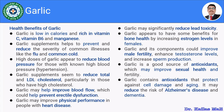Garlic appears to have benefits for bone health by increasing estrogen levels in females, making it useful in osteoarthritis. Garlic and its compounds could improve male fertility, enhance testosterone levels, and increase sperm production. It is also a good source of antioxidants, may improve sexual health, and contains antioxidants that protect cells from damage and aging, potentially reducing the risk of Alzheimer's disease and diabetes.